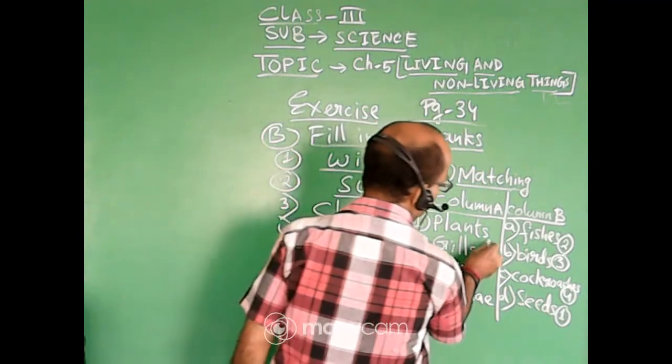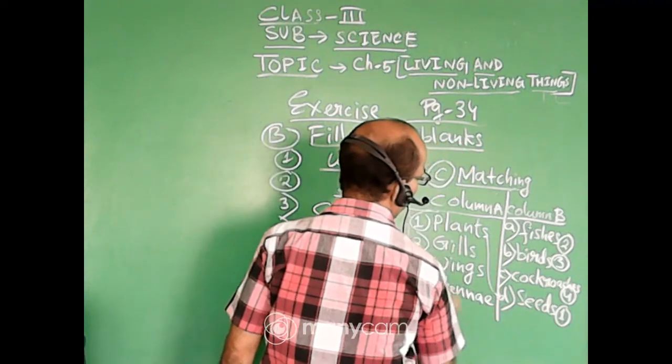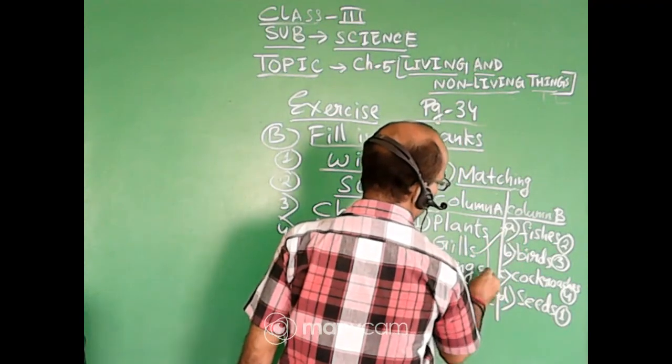So plants is seeds. Gills is fishes. Wings is birds. And antenna is cockroach.